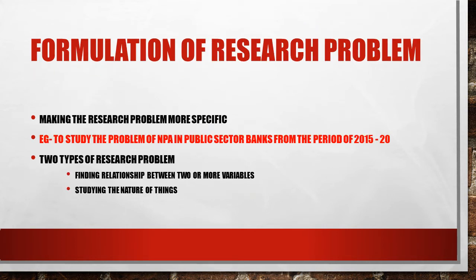The second step is the formulation of a research problem. It means the researcher is trying to make the research problem more specific, finding out all the details that can be studied within that research. For example, if the researcher initially thought of the research problem in the area of NPA — non-performing assets — in the banking sector, he goes a step further to clarify and make the details clear, explaining the problem as a study of NPAs in public sector banks from the period 2015 to 2020.